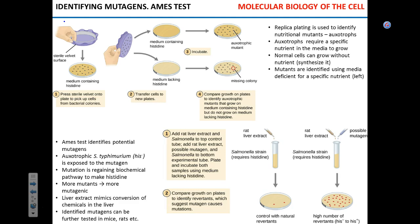Ideally you'd expose 10,000 people to the chemical and observe them over 15 years to see if they develop cancer — but that's ethically and cost-prohibitive. You could try mice, but mice are expensive, they aren't people, and finding a tumor in a mouse requires MRI machines that cost about a quarter million dollars. There is a less expensive way to start testing for potential mutagenesis: it's called the Ames test.